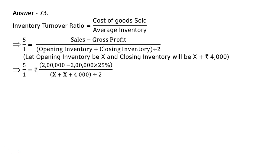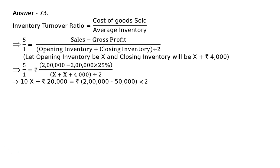That is: 5 upon 1 equals rupees 2 lakhs minus rupees 2 lakhs times 25 percent — because gross profit is 25 percent on sales — whole divided by opening inventory rupees x plus closing inventory rupees x plus 4000, whole divided by 2. This implies 10x plus rupees 20000 is equal to, by cross multiplying.